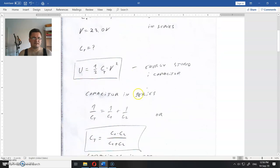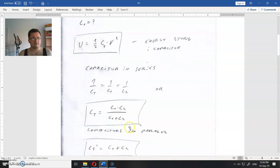When capacitors are in series, this is how we find the equivalent capacitance. For series: 1/C_eq = 1/C_1 + 1/C_2.